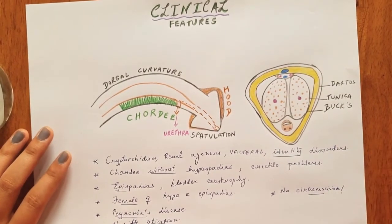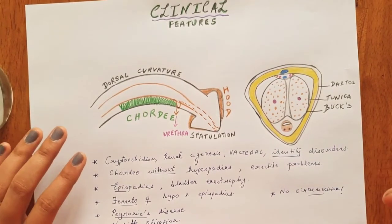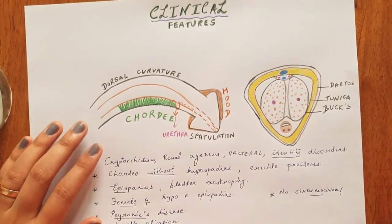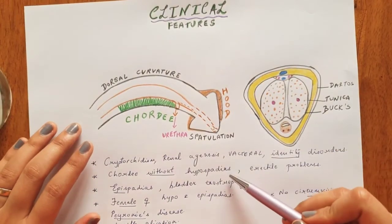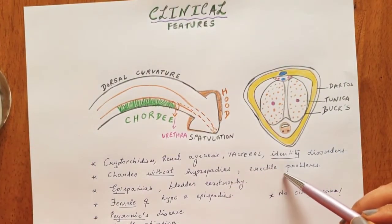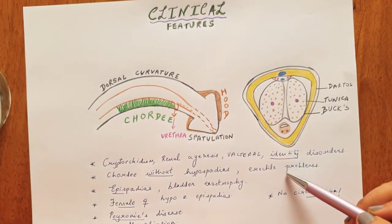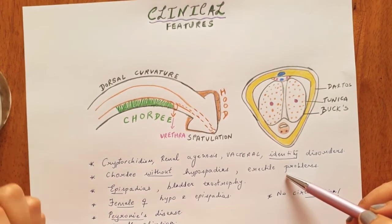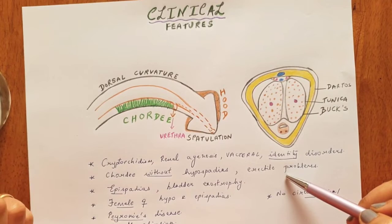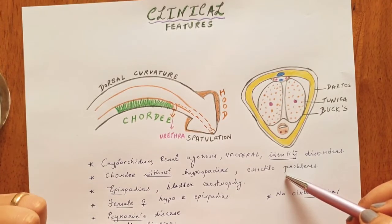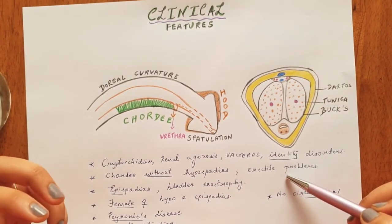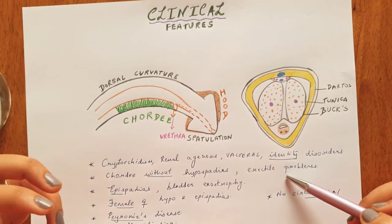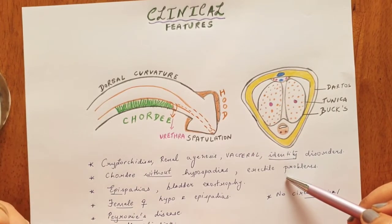There is also a condition known as chordee without hypospadias, which can be spontaneous and leads to erectile and sexual dysfunctions — surgical correction is required in those cases as well. Common viva questions include: Can chordee happen without hypospadias? Yes it can. Can hypospadias occur in females? Yes it can also happen.